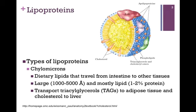Let's consider the types of lipoprotein particles. First, we'll consider chylomicrons. Lipids that we take into our diet and are processed in the intestine are packaged into chylomicrons for delivery from the intestine to other tissues. The apolipoprotein or protein component is marked, along with phospholipids in blue, triacylglycerols, cholesterol esters in yellow, and cholesterol. These are the largest of our lipoprotein particles, 1,000 to 5,000 angstroms, and they contain the highest proportion of lipid — only 1 to 2 percent protein.